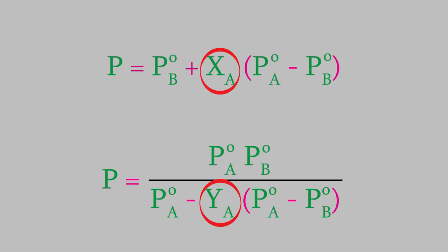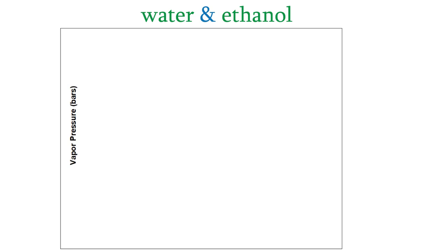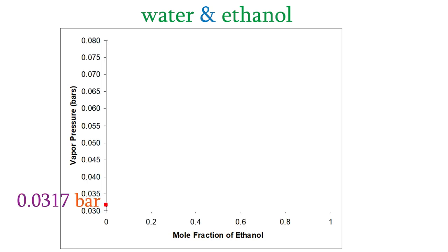That means it's easy to figure out how the pressure varies as the mole fraction changes, and we can plot the pressure based on the mole fraction in either the liquid or gas phases. Suppose we have a binary mixture of ethanol and water. I'll put the overall vapor pressure on the y-axis and the mole fraction of ethanol on the x-axis. At 25.0 degrees Celsius, the vapor pressure of pure water is 0.0317 bars, and the vapor pressure of pure ethanol is 0.0787 bars.